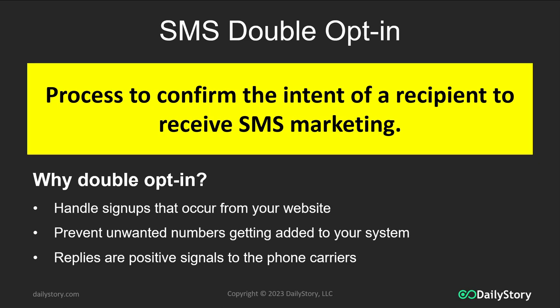A double opt-in SMS is a type of text message that you're sending to a recipient to confirm their intent to receive SMS marketing from you. The reason you want to do this is because if you're using a mechanism such as a web form, a pop-up on your website, a QR code, or anything else to collect SMS numbers that you want to send text messages to,